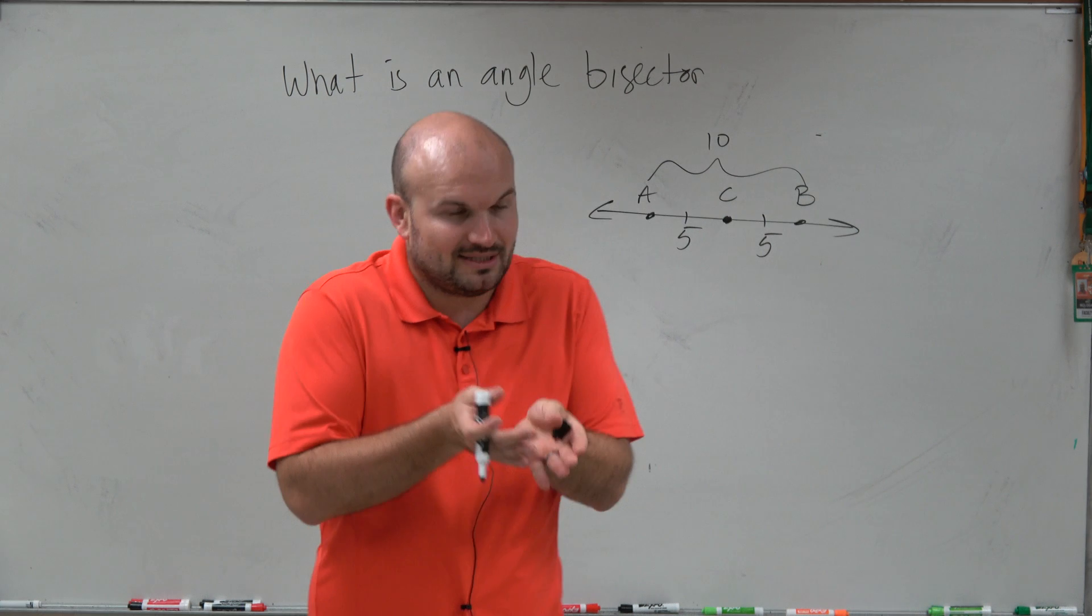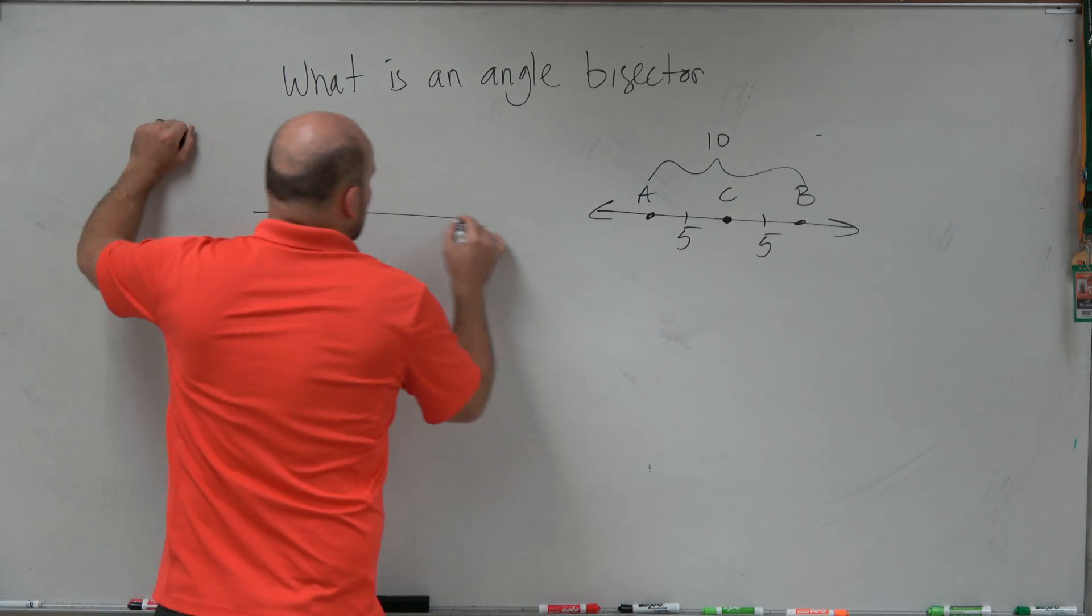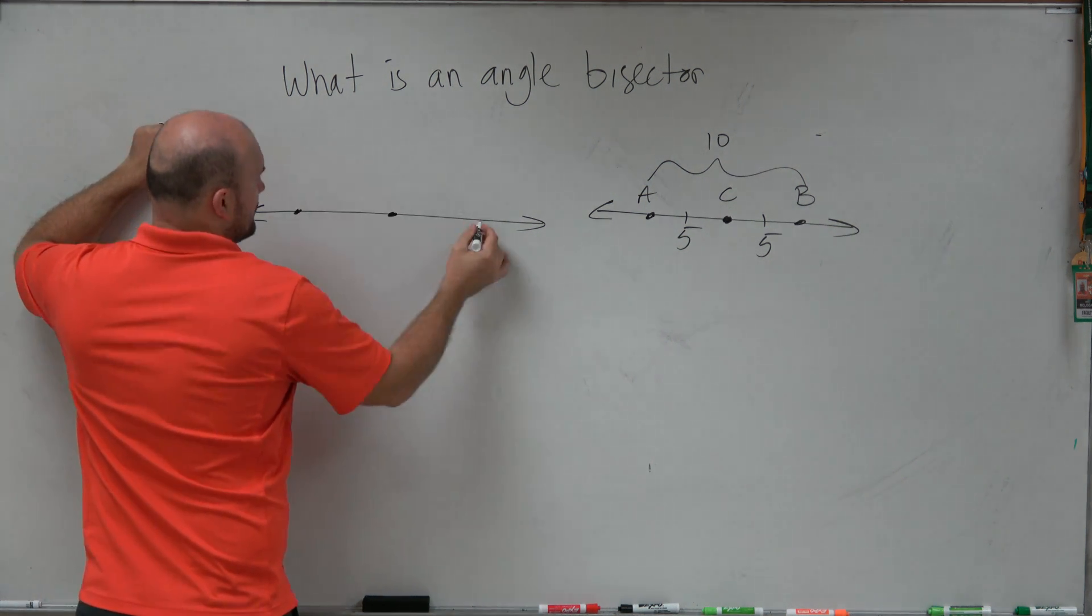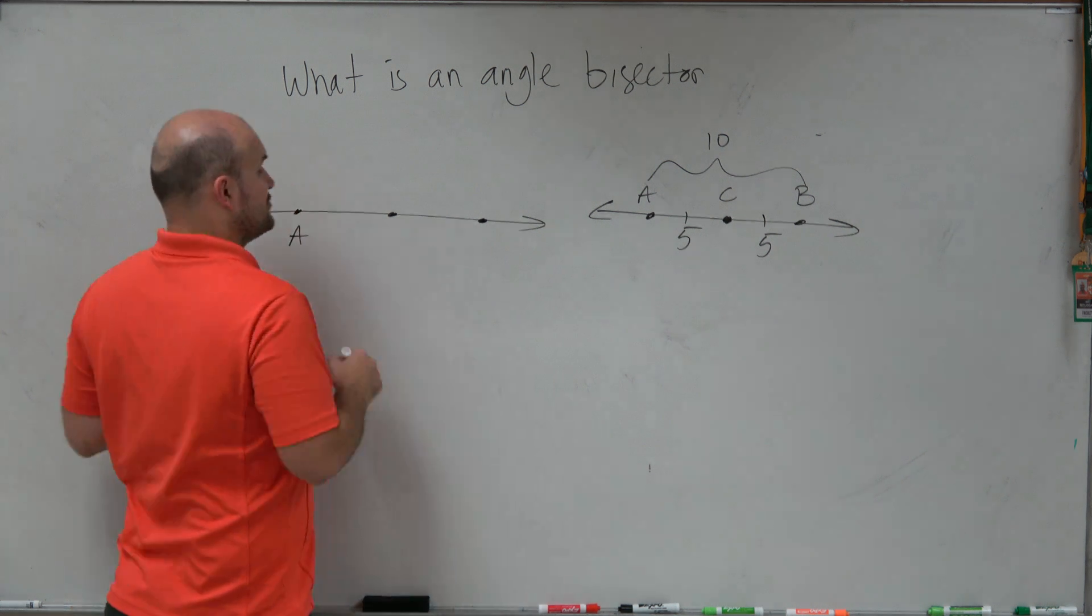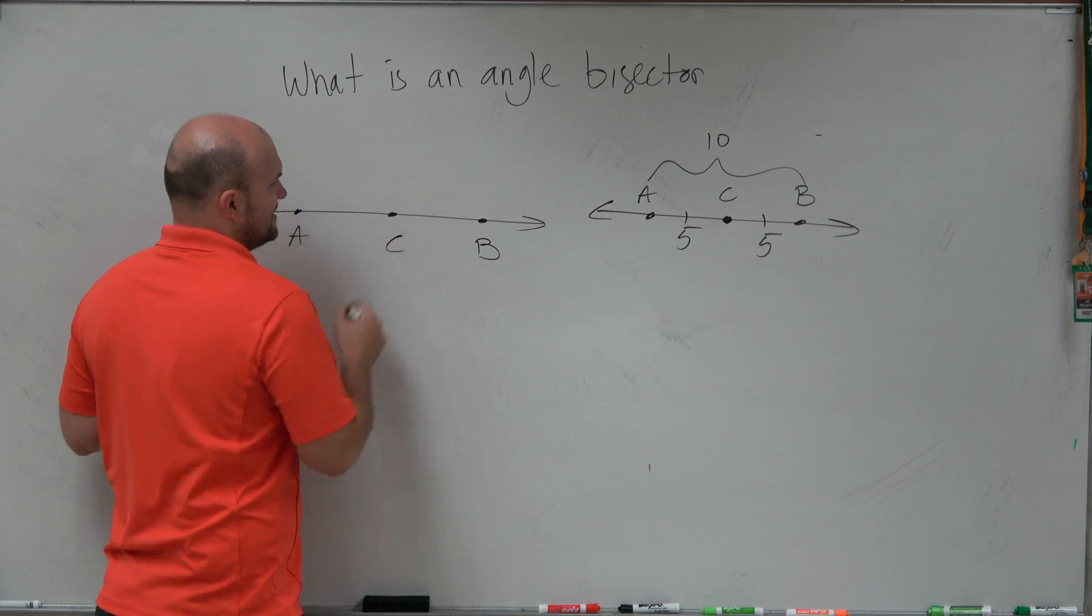So the midpoint basically cuts up that angle in halves. Now we kind of actually have already introduced an angle bisector, and what we did is when we talked about the difference between a straight angle and a right angle. So here's two points, here's A, B, and C. That would be called a straight angle, right?